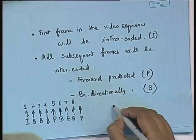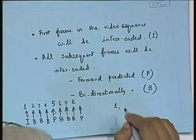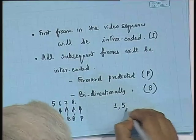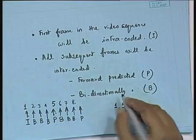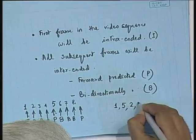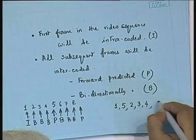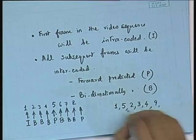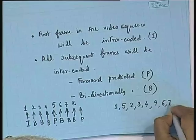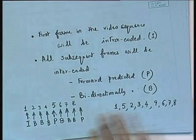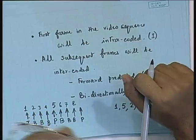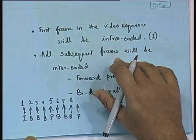Whenever we are encoding, we are not encoding in the correct display order. First we encode frame 1, then frame 5. Only when frames 1 and 5 are encoded can we encode frames 2, 3, and 4. Then we encode frame 9, and only when both 5 and 9 are encoded can we encode frames 6, 7, and 8. So there is a juggling in the ordering of encoding, and that must be done if we want this prediction scheme.